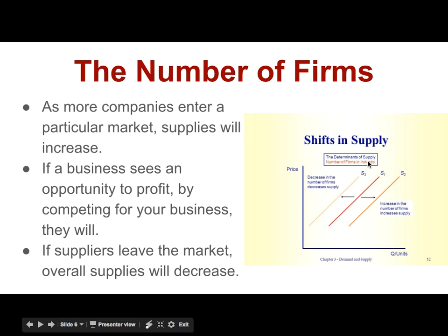The number of firms in a market is another determinant — basically the number of companies supplying the same goods. If you run the only shoe store in town and business is great, your supply is struggling to keep up with demand. If another business sees an opportunity to profit, they open another shoe store. Now your town has two shoe stores. Price has not changed — shoes are still selling for the same price — but with two stores, we've increased the supply of shoes. More shoes are being supplied to consumers, both stores acting under the profit incentive.